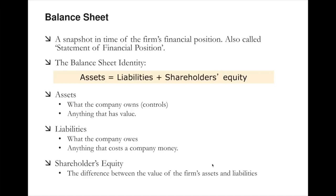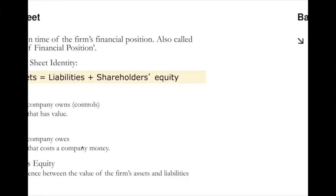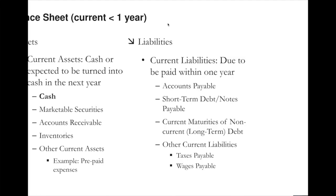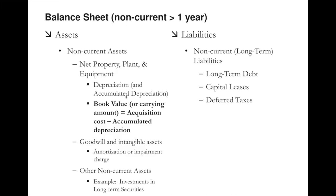The balance sheet is a snapshot in time of the firm's financial position, also called the statement of financial position. The key formula: assets equals liabilities plus shareholders' equity. Assets are what a company owns, controls, and anything that has value. Liabilities are what the company owes. Shareholders' equity is the difference — assets minus liabilities. Important terms below net property, plant and equipment include depreciation, accumulated depreciation, and book value, which we will discuss shortly.